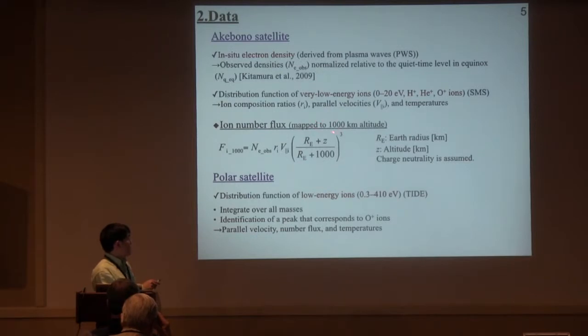The flux are calculated using the total electron density and composition ratio and parallel velocities, and mapped to 1,000 km altitude. Polar satellites measure low-energy ions down to about 0.3 eV. Although the data are integrated over all masses, we identify the peaks that correspond to oxygen ions and calculate the parallel velocity, number flux, and temperatures for the peaks that correspond to oxygen ions.